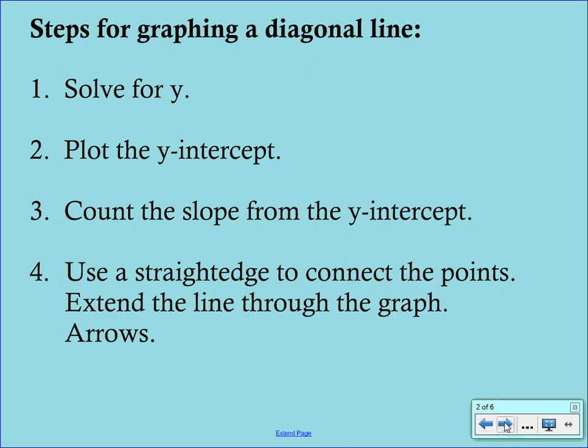Once you have y by itself, that's slope-intercept form. So you should be able to pick out the b from the equation. Step number two is to plot the y-intercept, which is the coordinates (0, b).